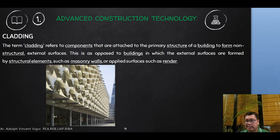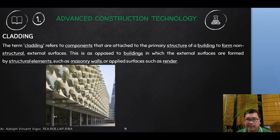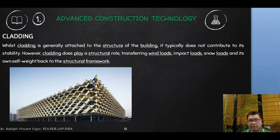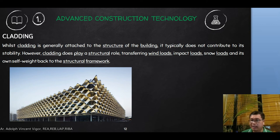Cladding is a technology many of you are familiar with. The term refers to components that attach to the primary structure of a building to form non-structural external surfaces. For example, this library building in Riyadh features tensile structures on the outside, creating a three-dimensional depth effect. Cladding is generally attached to the building structure but does not contribute to stability — it only plays a role in transferring loads such as impact loads and wind loads to the structural framework.